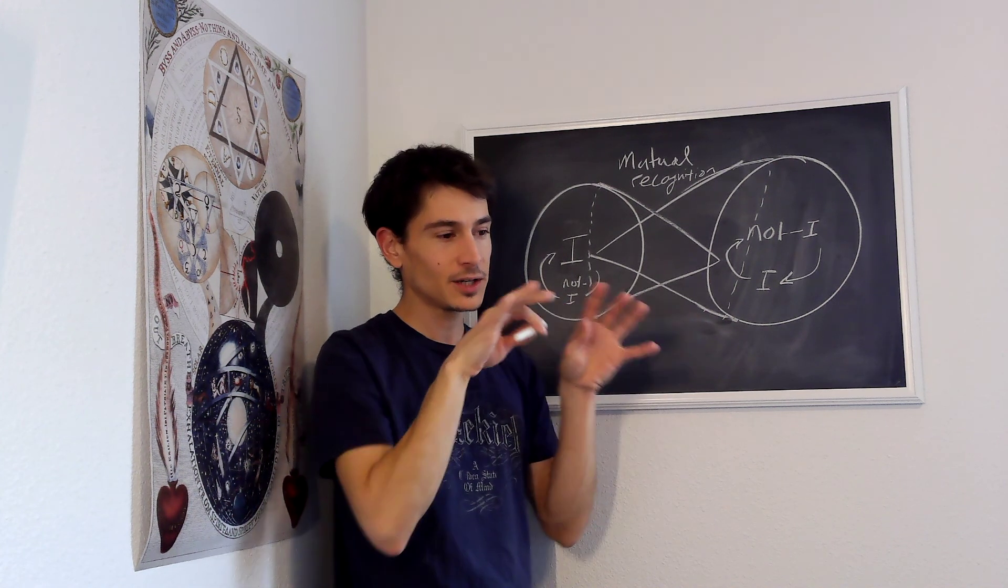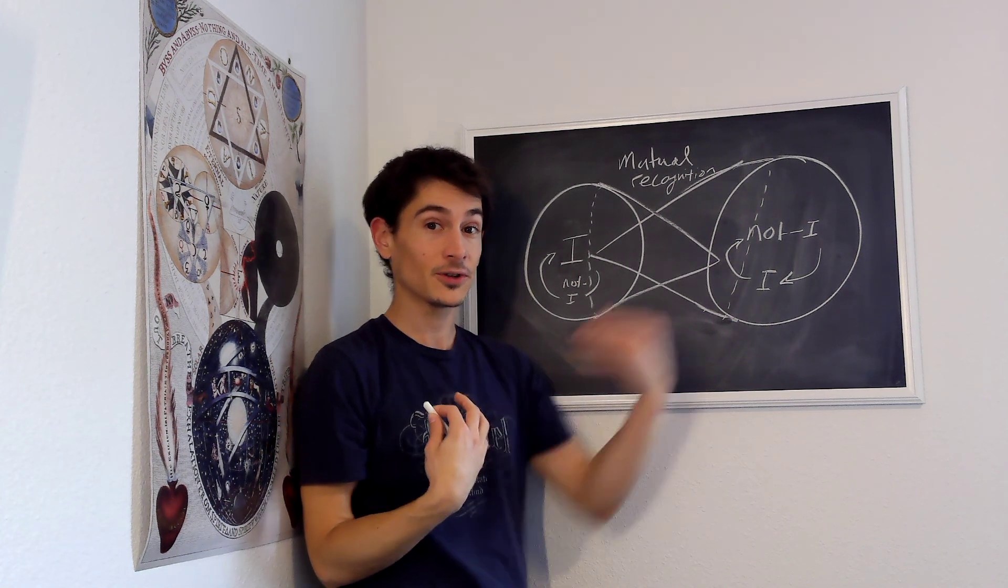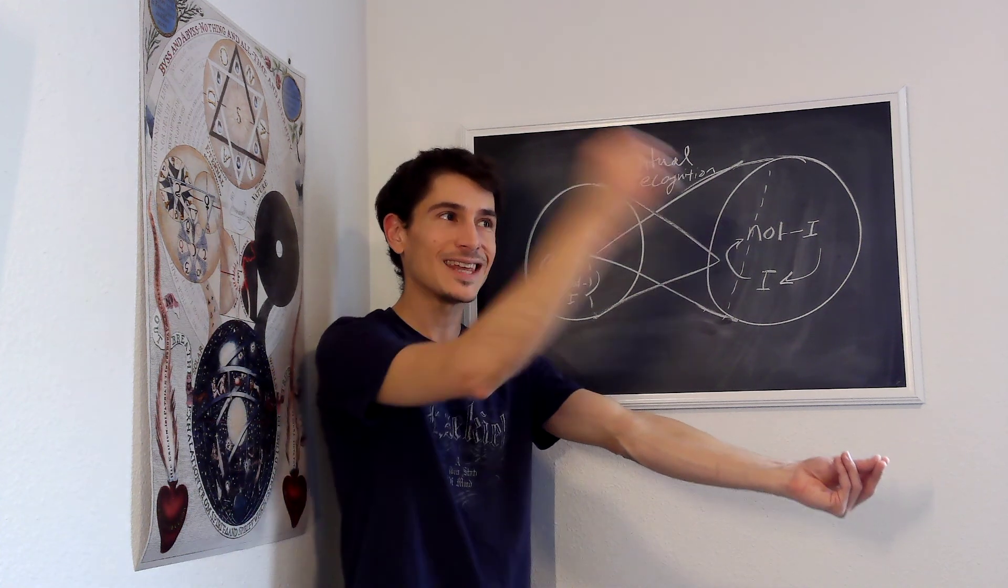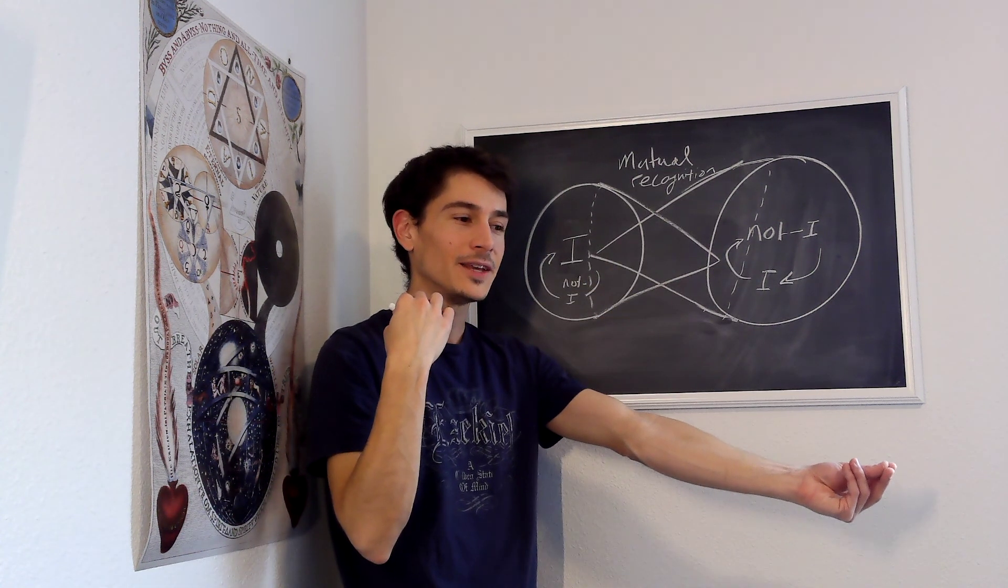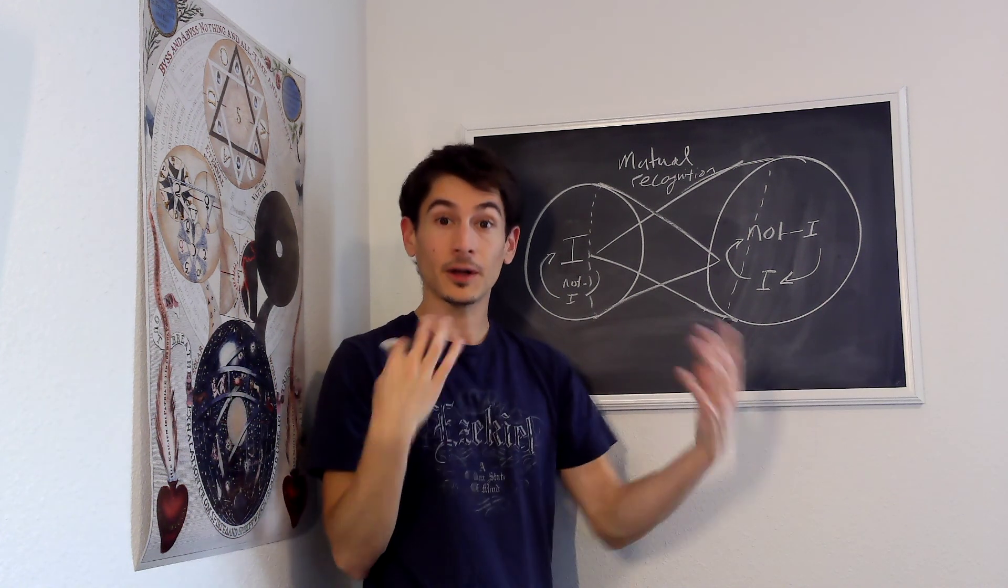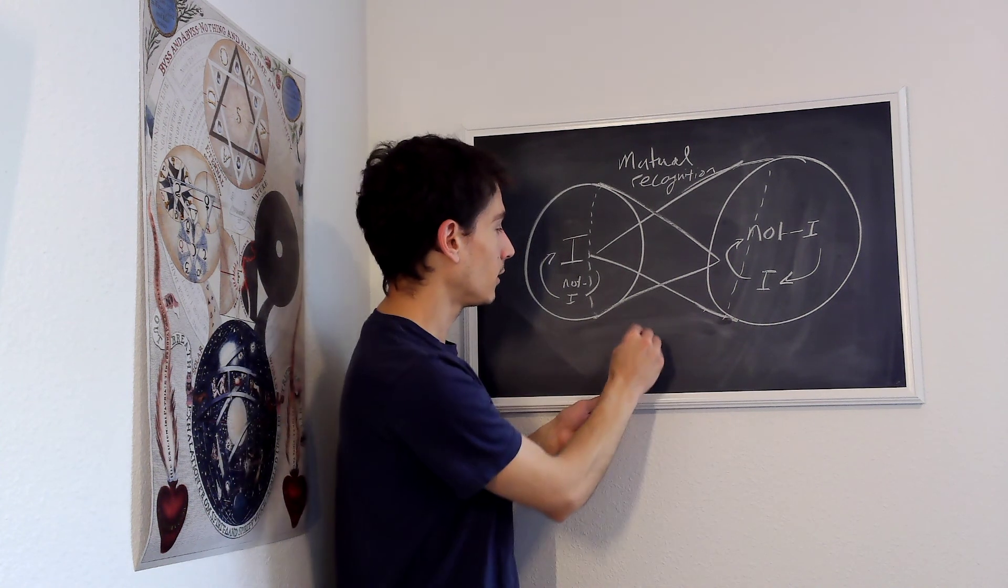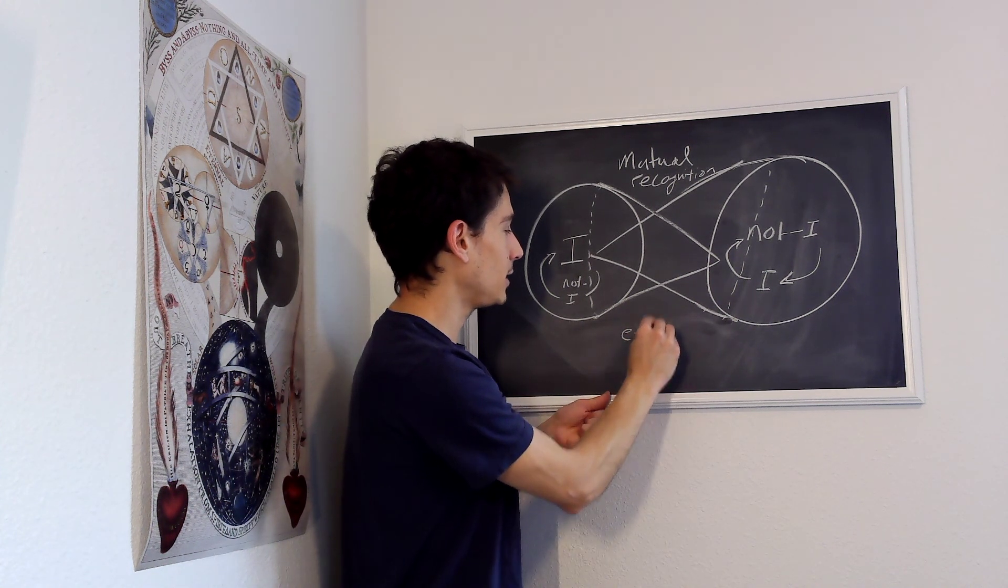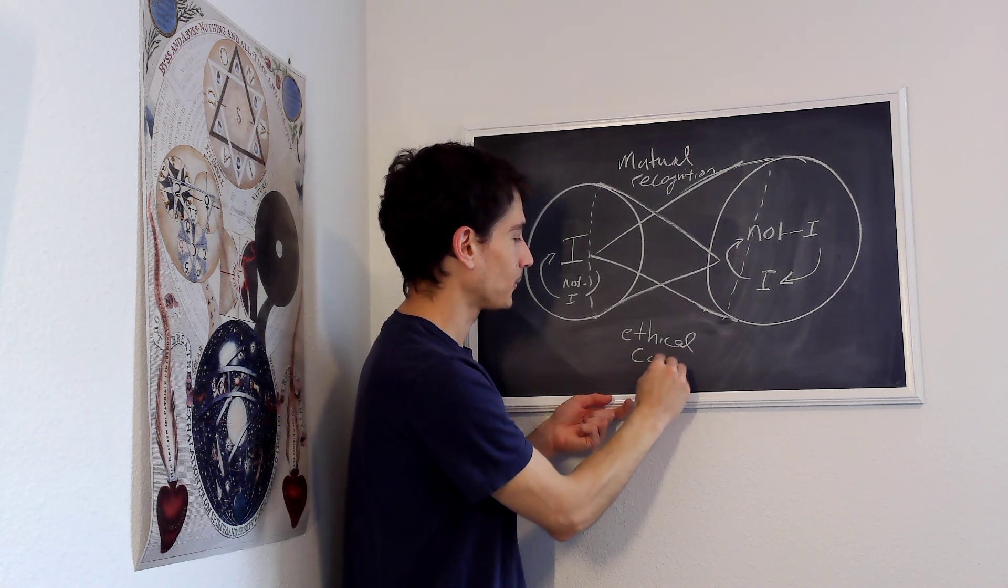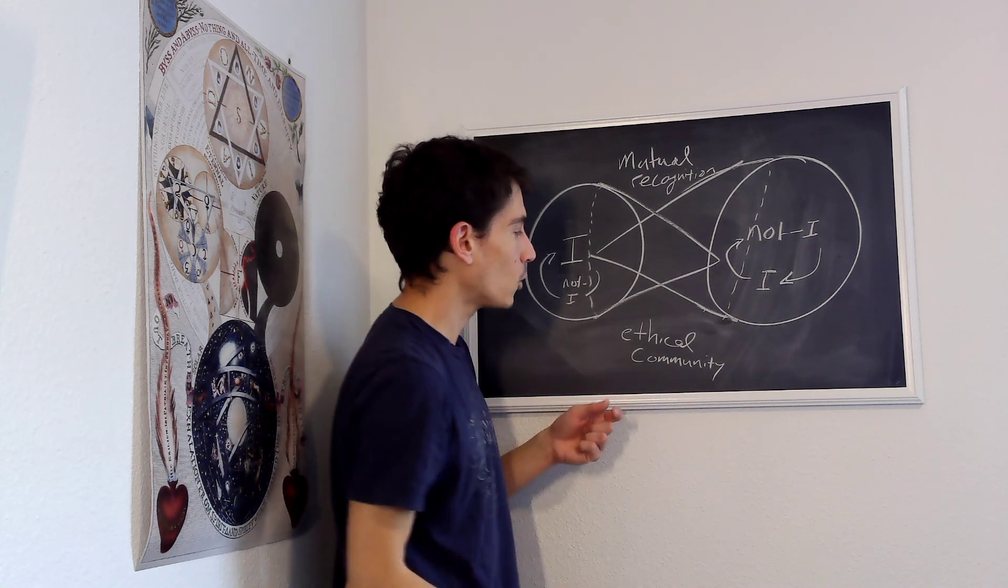He's not closing us into our own subjectivity. He's saying that for us to become conscious of ourselves already presupposes other consciousnesses outside of us. And what he really means by the absolute ego is an ethical community within which finite beings can become conscious of themselves and conscious of their responsibility to one another. So that the absolute ego is in some sense an ethical community or a social self.